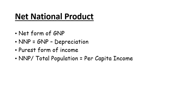Net National Product is the purest form of income. In this, we account for depreciation and also adjust for income earned by Indian individuals from foreign countries and subtract income sent out by foreigners to their countries. So that is the complete picture of Net National Product.